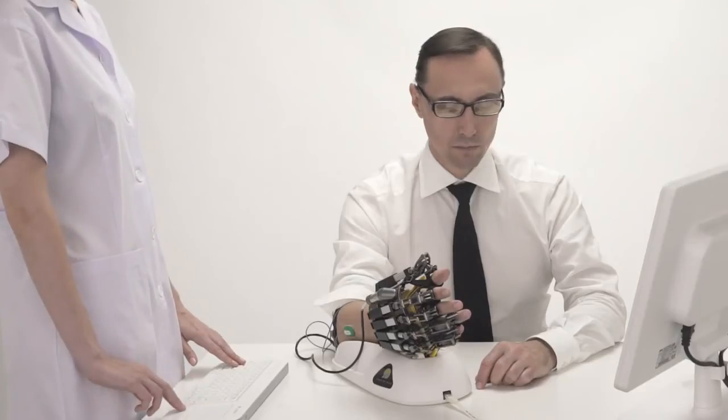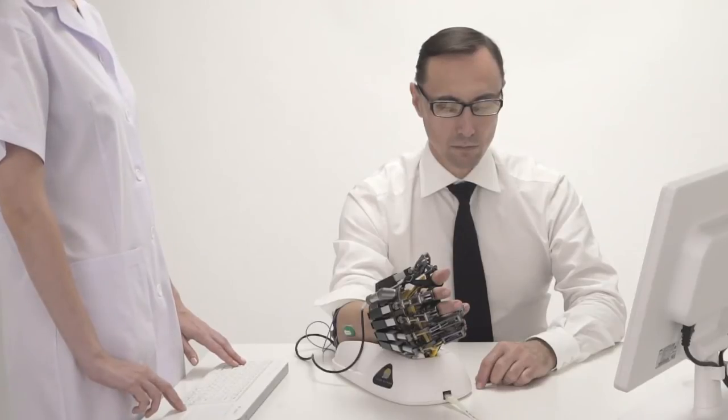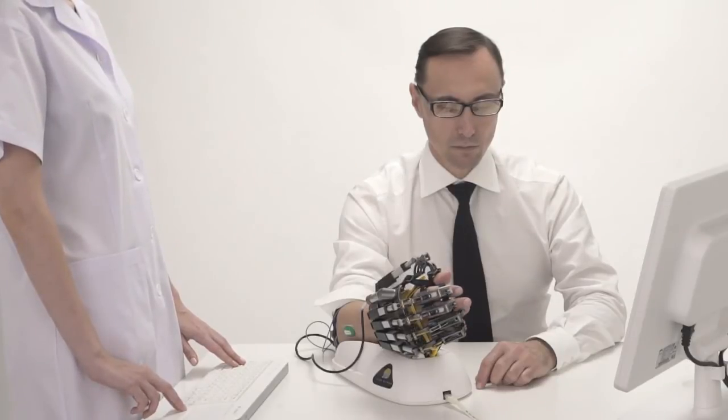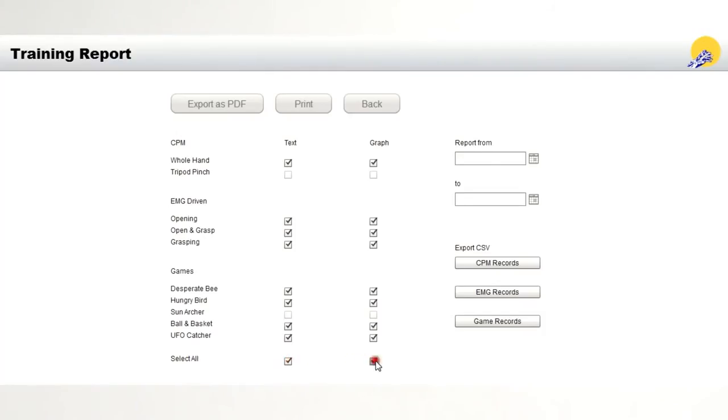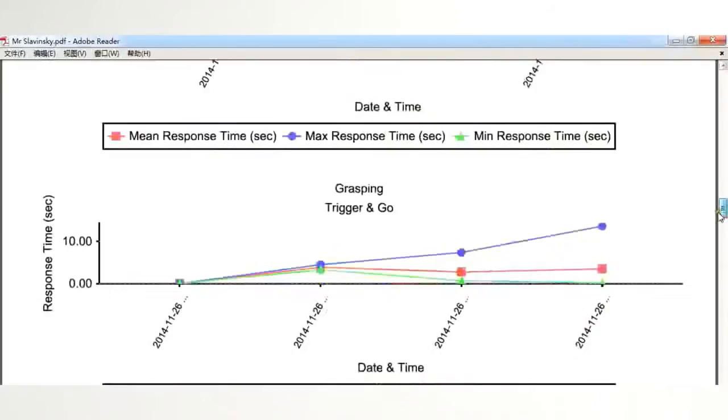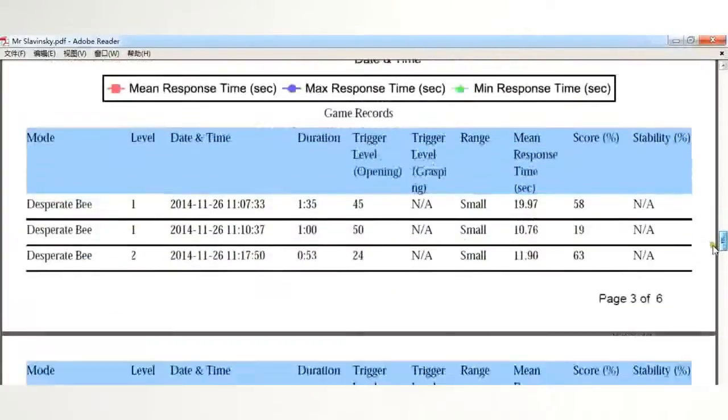Thanks to forearm support, the therapist can use the Hand of Hope for the whole arm recovery on different stages of rehabilitation. Also, therapists can easily extract the report on patients' performances in PDF or Excel file.